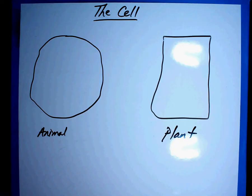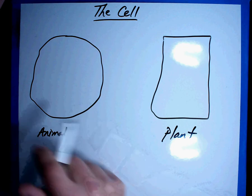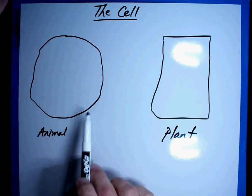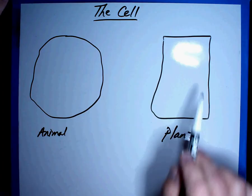Now here's how I'm going to teach this today. I'm going to teach this as the cell being a country. Let's pretend that you own a country. Now every country has a border of some sort. You'll notice that the animal cell has more of a round border and that the plant has more of a square border.